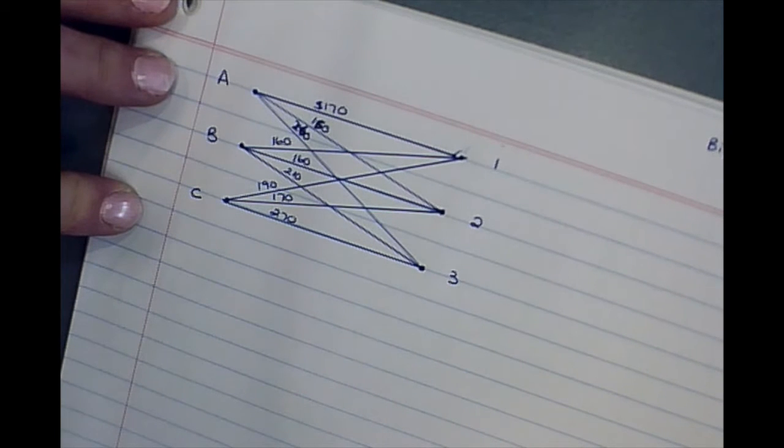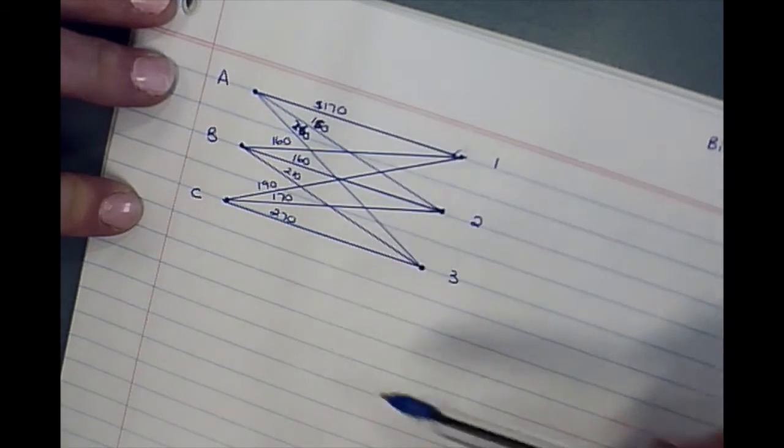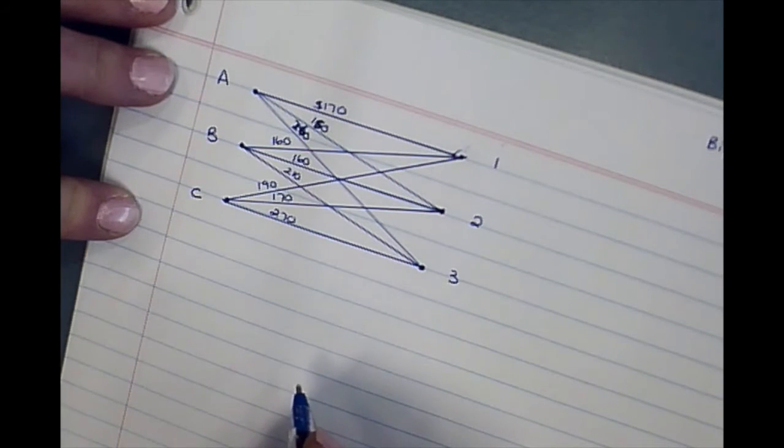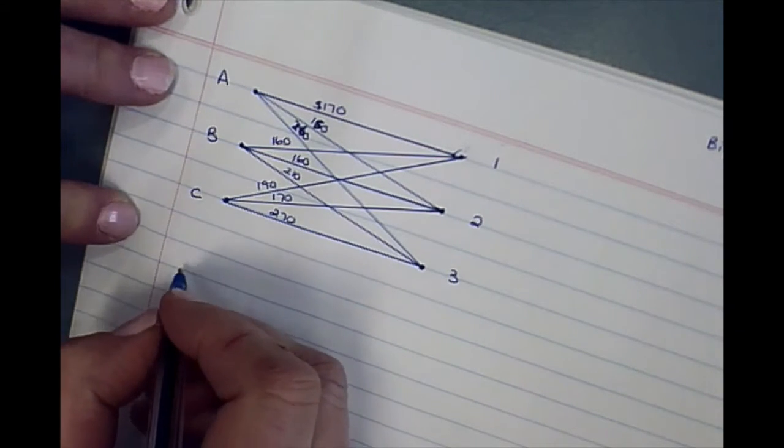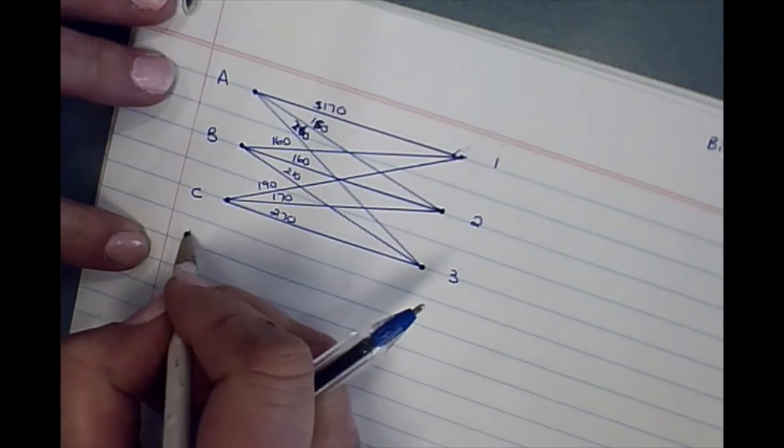So what I thought I would do is show you an example of how you do an assignment problem where you're given the information as a bipartite graph. What we have to do is do our cost matrix and I'm going to do it in pencil.